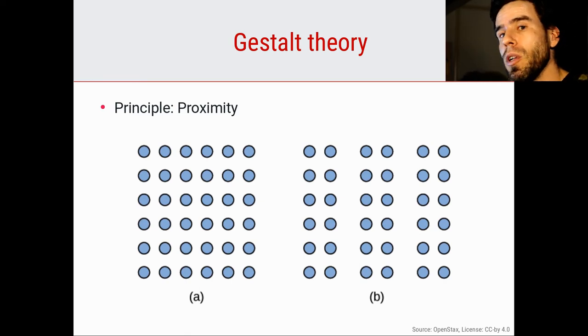Here we have the principle of proximity. The principle of proximity says that we consider things near each other to be part of the same object. If we look at A, that's a grid of 6 by 6, or 36 dots. Looking at B, most people would perceive it as three vertical bars. Why? Simply because these dots are closer to each other than those dots. We tend to group them together as one bar, another bar, and another bar. We still can distinguish the individual circles, but we perceive three separate bars.